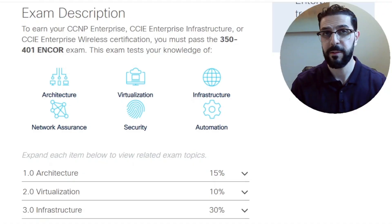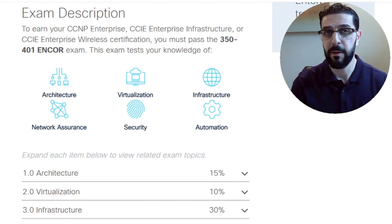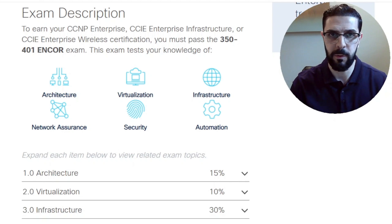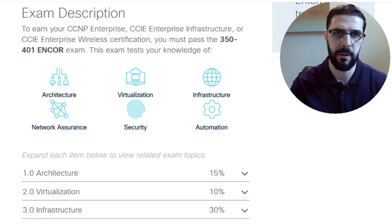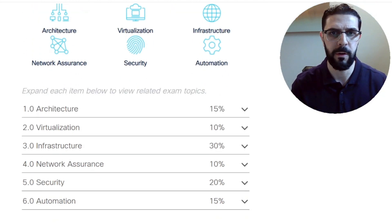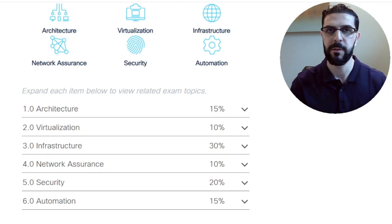First of all, what does the CCMP Enterprise Core exam cover? This exam covers the topics needed to configure, troubleshoot, and manage wired and wireless enterprise networks. You'll need to understand the concepts and demonstrate hands-on skills in six core topics: architecture, virtualization, infrastructure, network assurance, security, and automation.